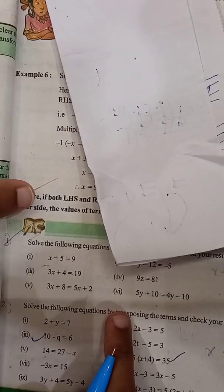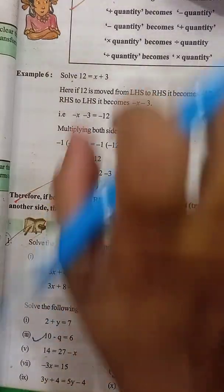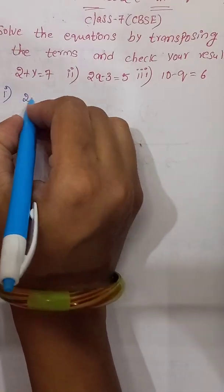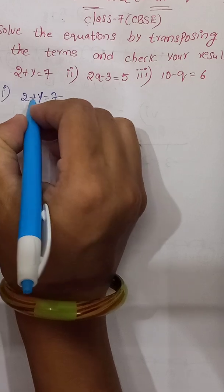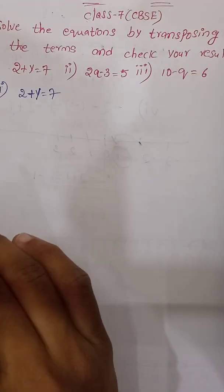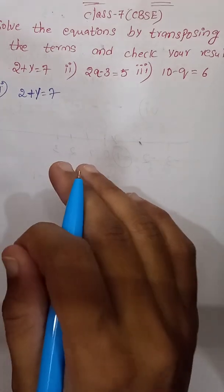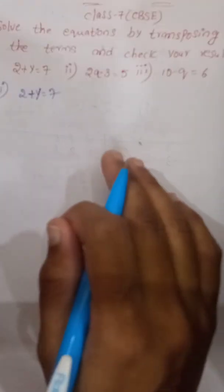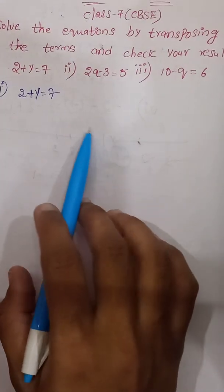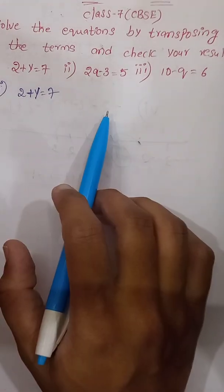But now we have to solve these equations by transposing. Whenever values move from one side to the other — LHS to RHS or RHS to LHS — the sign of the numbers will change. If we have a plus quantity and move it from LHS to RHS, it becomes minus. If we have a minus quantity, it becomes plus.